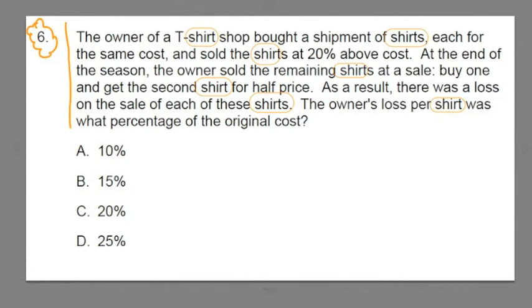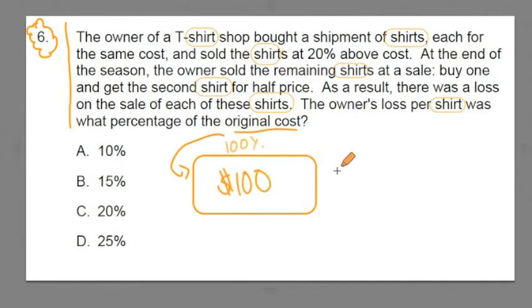Let's start with the first line. It talks about the owner buying the shirts at the same cost. Let's just draw a little rectangle here and imagine that this rectangle represents the original cost of the shirt. So this is part one of the problem. We've got to figure out what the original cost is, the wholesale cost, to find the retail cost.